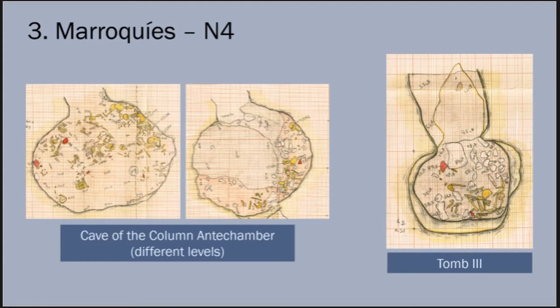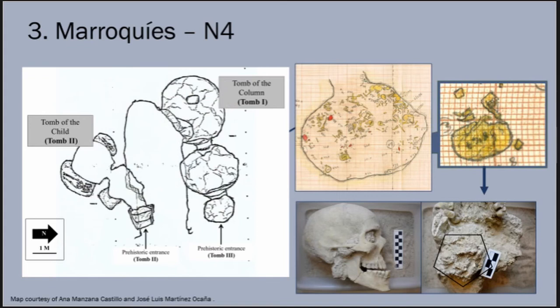First, they noted clustering of skulls and long bones along the walls and entrances of cave chambers, a patterning which can be seen in their hand-drawn site maps. Second, they highlighted one burial that preserved some evidence of anatomical articulation, which was centrally placed in the antechamber of the cave of the column. I was able to locate this individual during my collections research and confirmed that the adult male did preserve articulated cervical vertebrae. Due to the central placement of this individual and the preservation of spinal articulations, this deposit likely represented one of the final depositions of human remains in this cave.